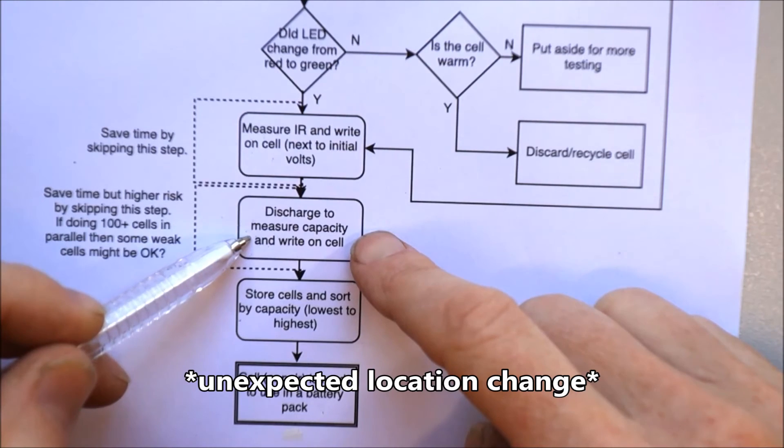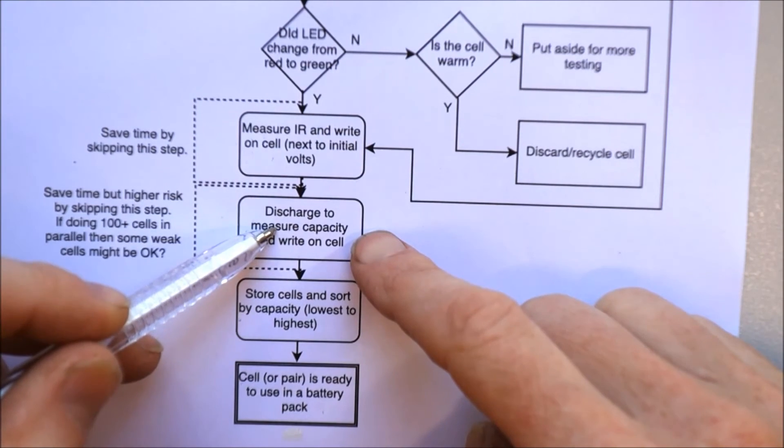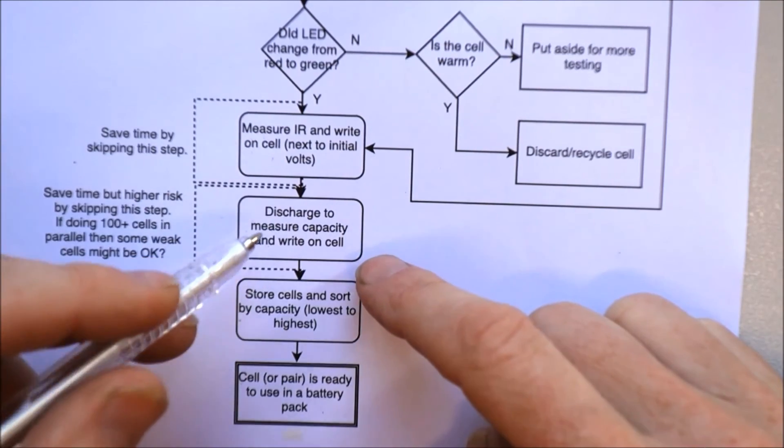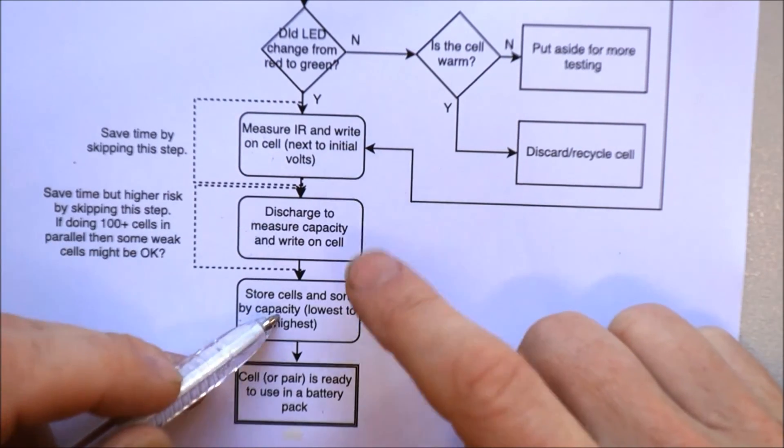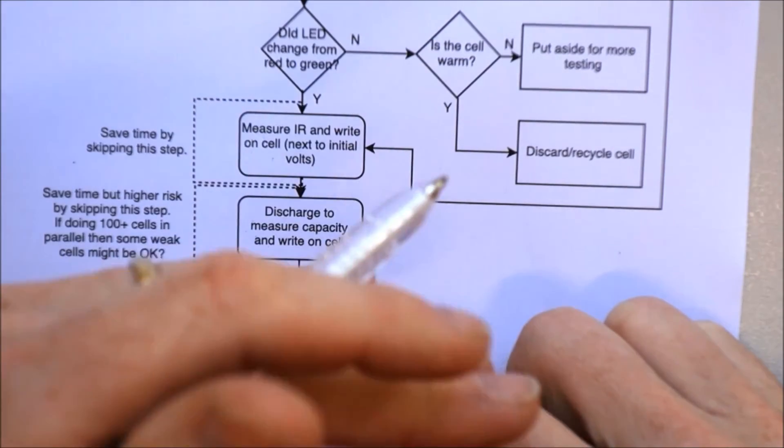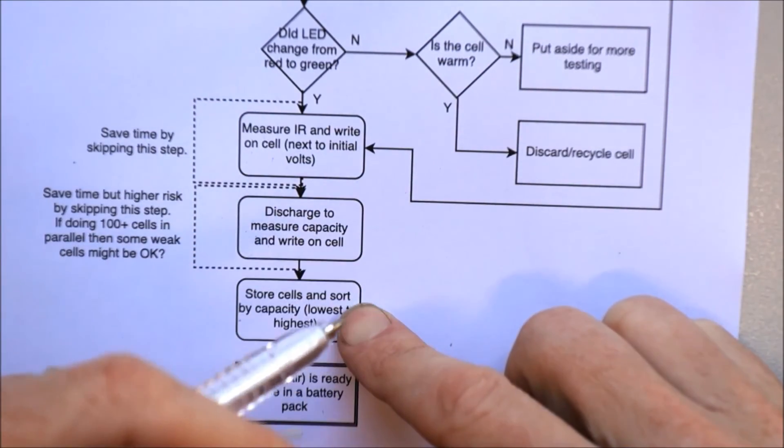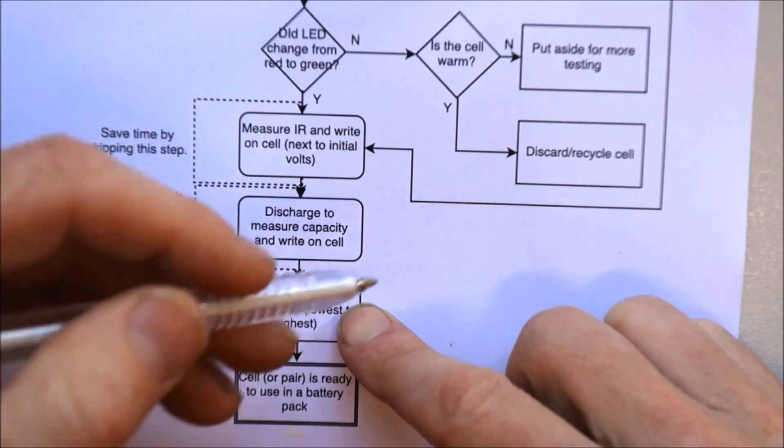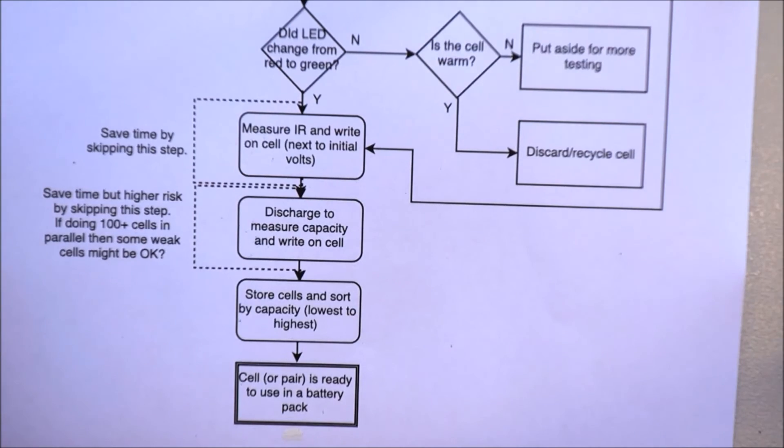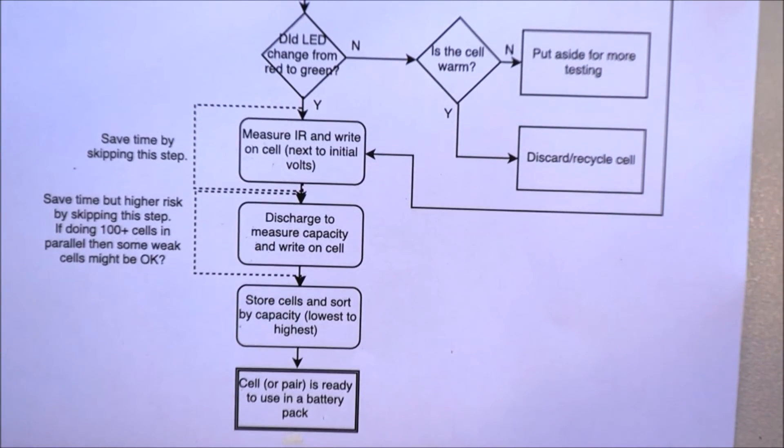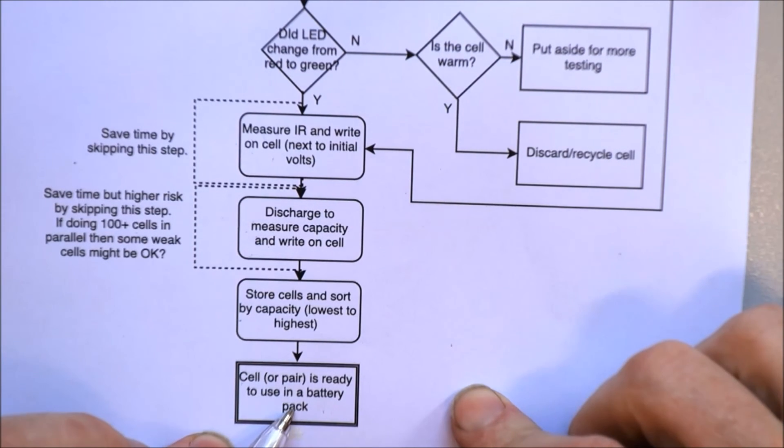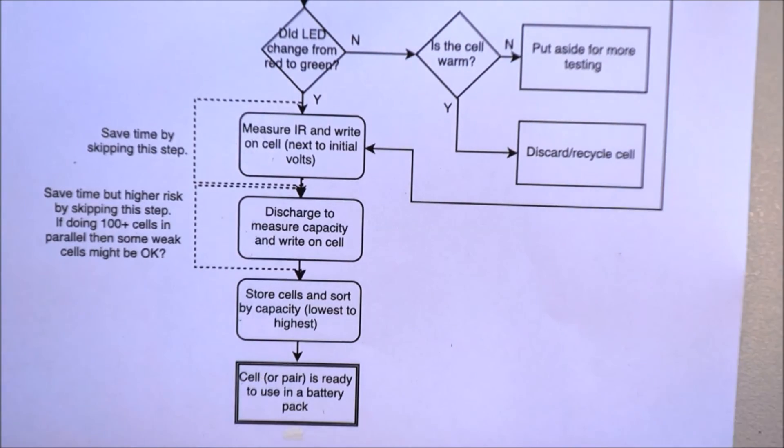Then I measure the capacity by discharging from fully charged down to 3 volts. Once I've got the capacity I write that on the cell and I can pull those out and add them to the cells that I've already done and I sort them by from highest to lowest so I have a big huge collection with all the cells. Once I've got enough then I can actually start building up the pack and that's my process.